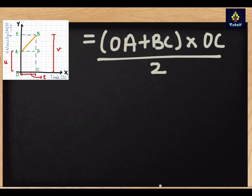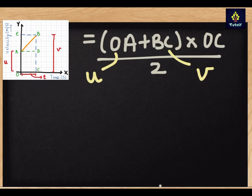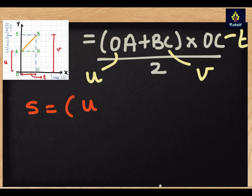Now let's see what OA is. OA is U. BC is the final velocity that is V. OC is the time taken. So we have all the values and we will put it in the equation. So what I will get is S is equal to U plus V multiplied by T divided by two.